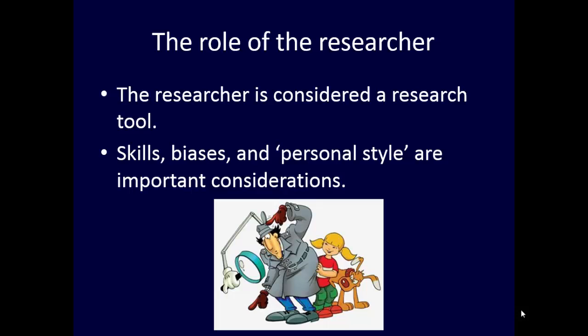In qualitative research, the researcher is considered a research tool. If you remember the COREQ guidelines, that very first section of domain one is all about the positionality of the researcher — who are they, what biases might they bring to the field, how do they position themselves relative to the research participants, how did they gain entry, and what are they trying to accomplish? So all of these issues of skills, biases, as well as personal style are important considerations. Are you comfortable asking people questions and probing deeper into an issue? Are you good at sitting and observing and taking detailed notes, or are you more of an engager who wants to interact? There's something to be said for playing to your strengths, and all of these skills can be learned within the research context. But it's important to recognize how our interactions and engagement in the field can influence the data collection process.